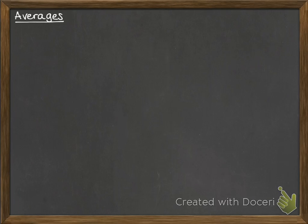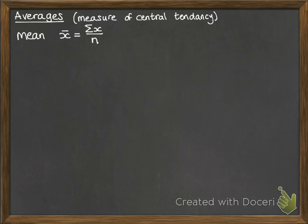On to averages today. Averages are sometimes called measures of central tendency, and mostly you'll be looking at the mean when doing calculations for the S1 course. Measure of central tendency just means what's happening around the middle of our data and what measures we can use to analyze that.